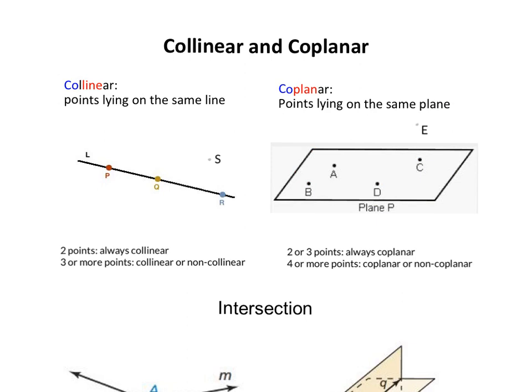Remember though, if you have only two points, you can always draw a line connecting them. So two points are always collinear, and when you have three or more points, they may be collinear, they may not be collinear.